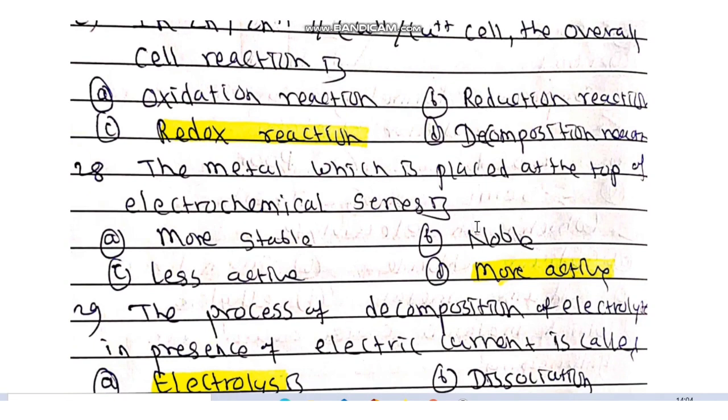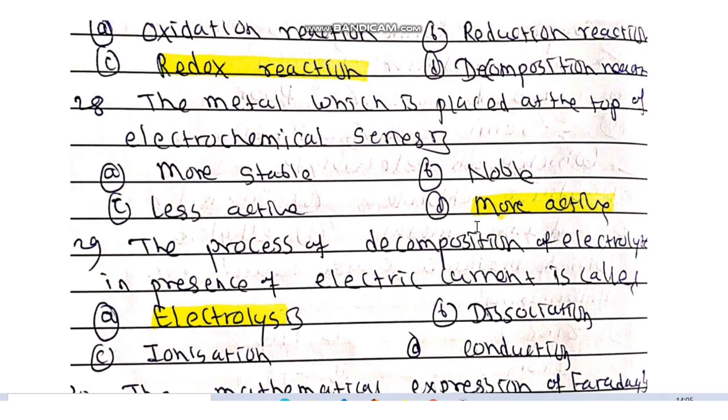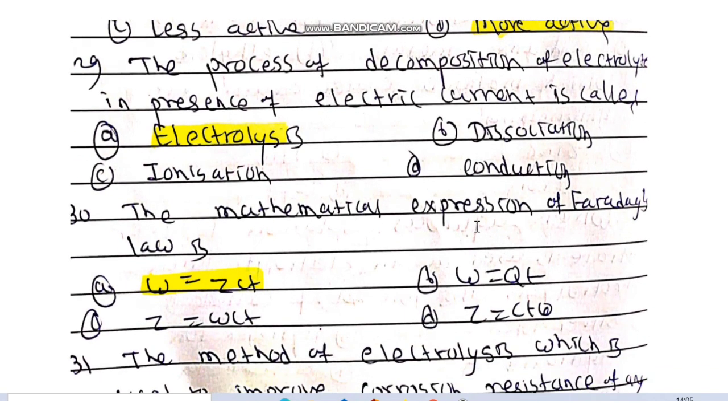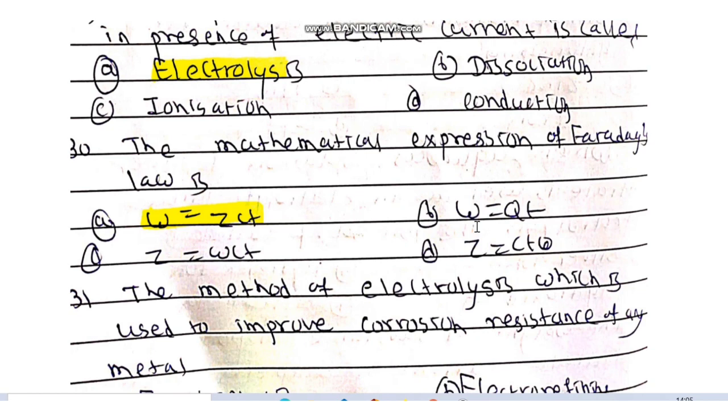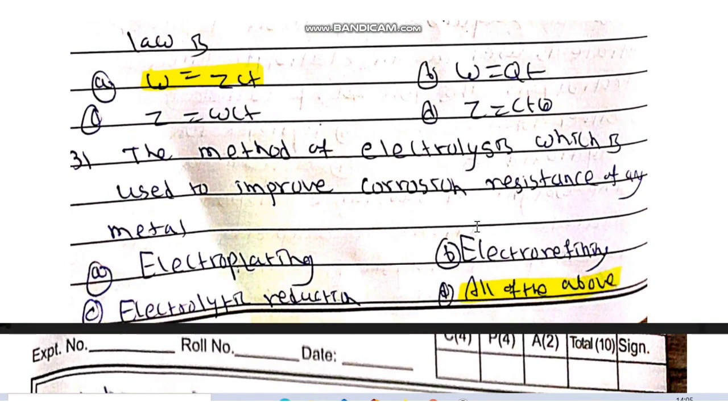The metal which is placed at the top of electrochemical series are the more active metals. The process of decomposition of electrolyte in presence of electric current is called electrolysis. Question number 30 is the mathematical expression of Faraday's first law is W = ZCT.